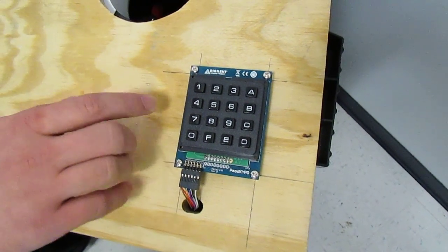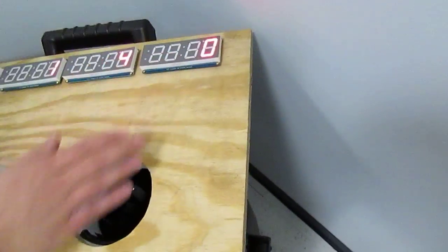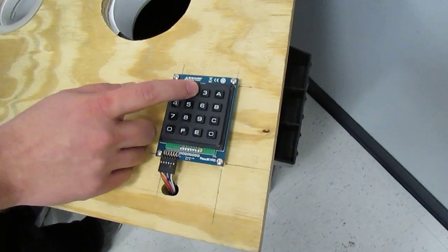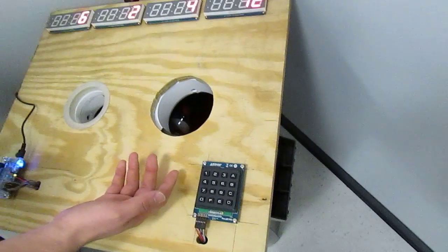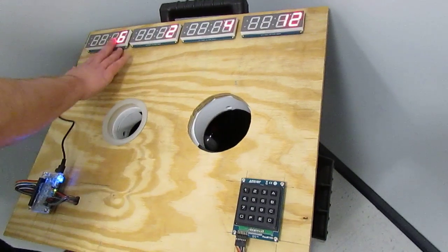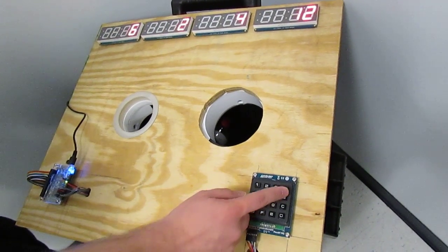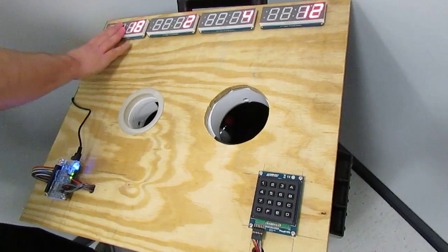We can put in glass bottle count on this display with the keypad. Say we had 12 glass bottles sitting off to the side and we wanted to add it to our total count. We put in 12, press the A button, and that would be added to our total count.